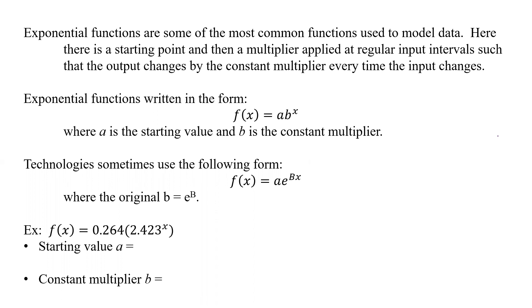So what does that look like? Well, an exponential function is written in the form f of x equals a, that initial starting point, times the multiplier b raised to some x. So depending on what input value it is, you have b to that x power. So a is the starting value, b is the constant multiplier.